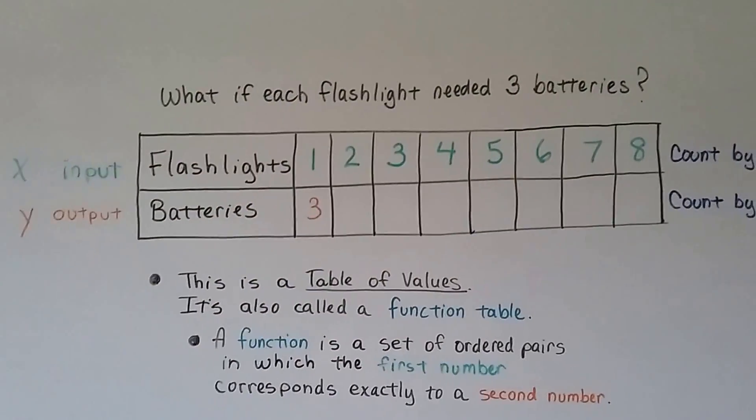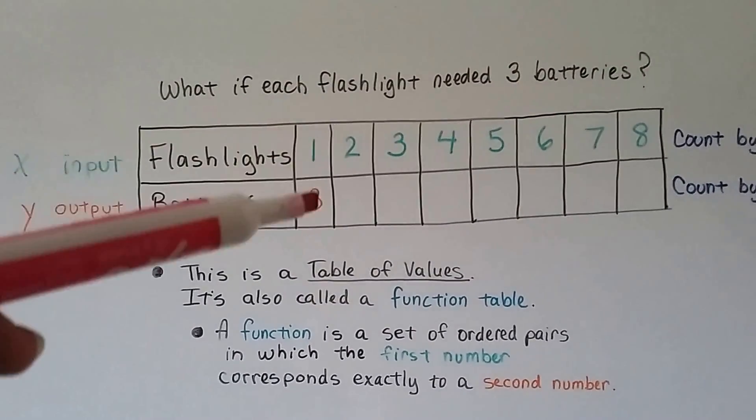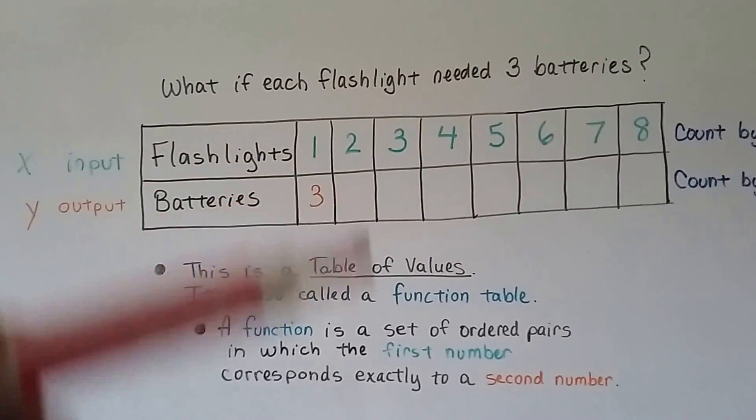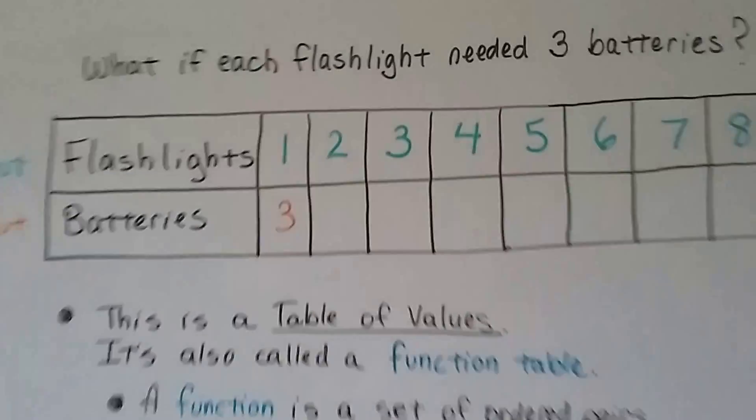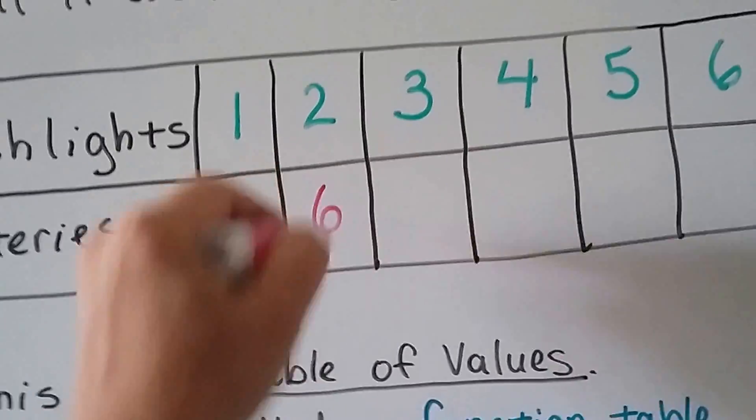So, the rule here is going to be to multiply by three. One times three is three. Two times three is? This is going to be a six, isn't it?